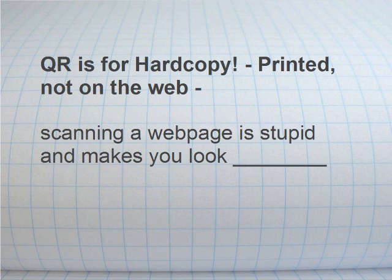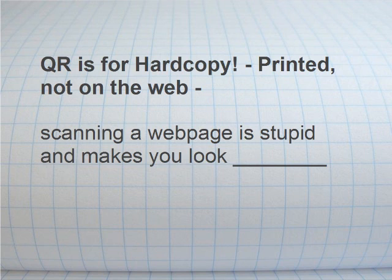QR is for hard copy — you don't need to put QR on your web pages. The phone number example I mentioned upfront might be an exception, where a QR code on your web page has information that's not scrapeable by bots. But it's kind of pointless to have a QR code linking to a page you're already at. If you're looking at a website on a computer screen, you don't need to scan it. WordPress plug-ins that put a QR code in your WordPress post — I don't think that's effective at all and I would highly recommend you don't do it.